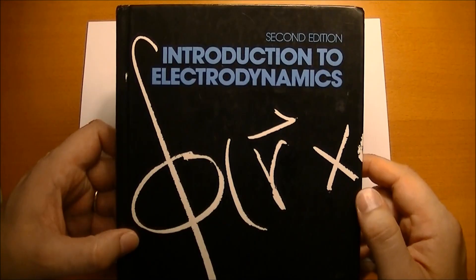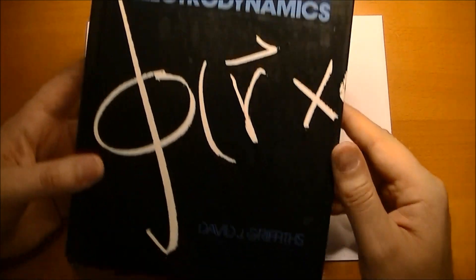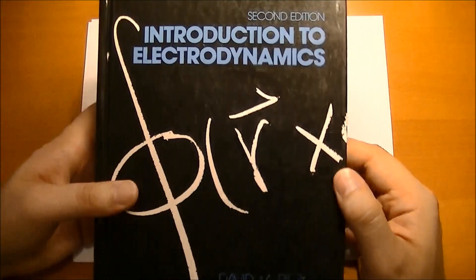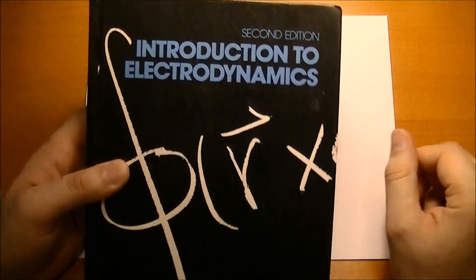The book that we're going to use, and you need to get this even though it costs a lot of money, is Introduction to Electrodynamics. This book is written by David J. Griffiths. It's a great book. This is probably the best physics textbook you're ever going to find in your entire life. This is the second edition.